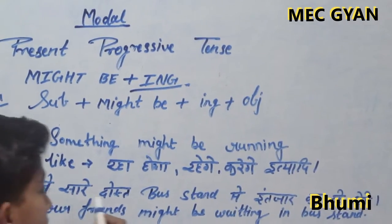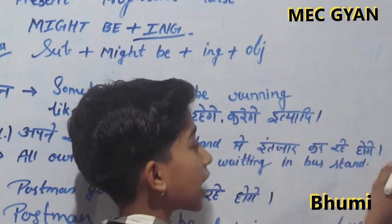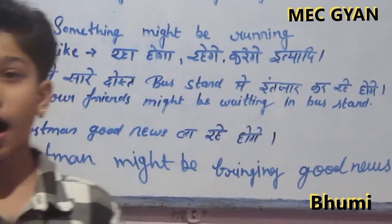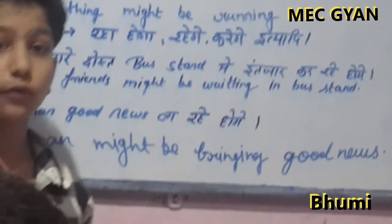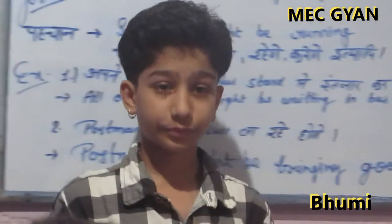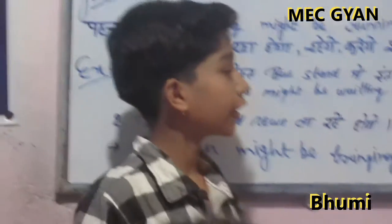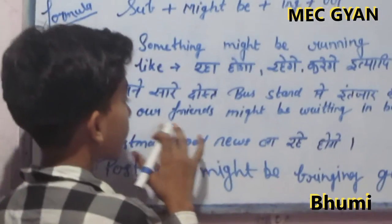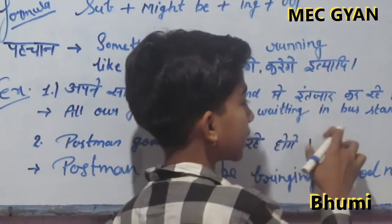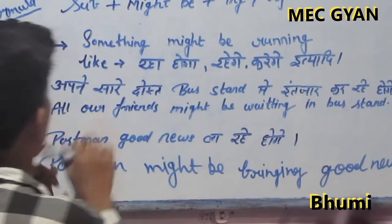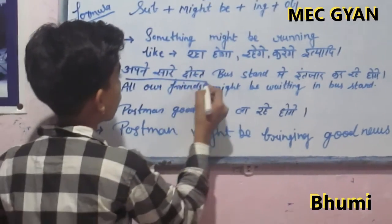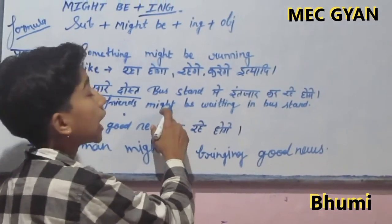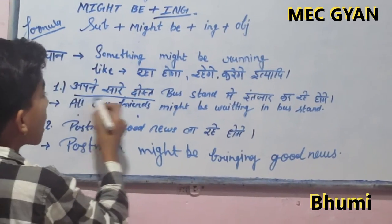My first example: 'All our friends might be waiting at the bus train.' We don't know if they are waiting or not, so we use this English sentence. 'All our friends' is our subject.